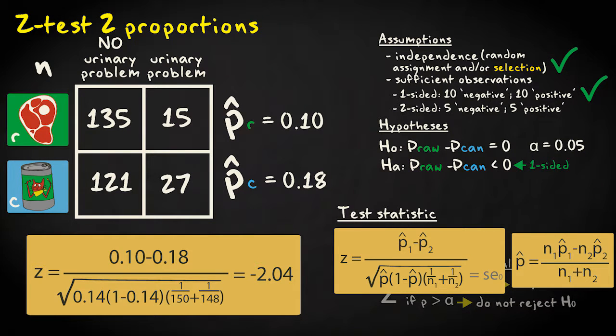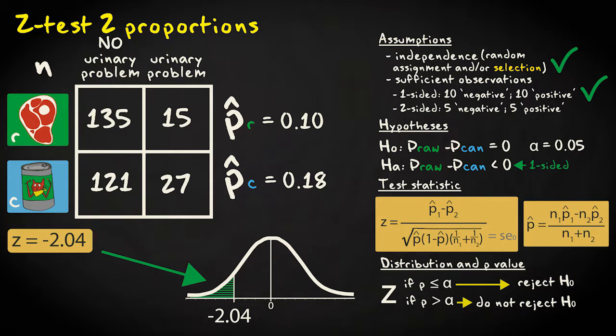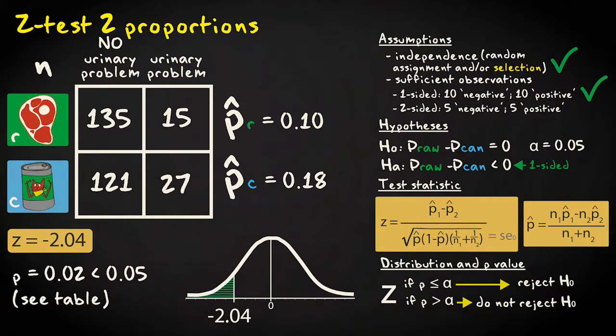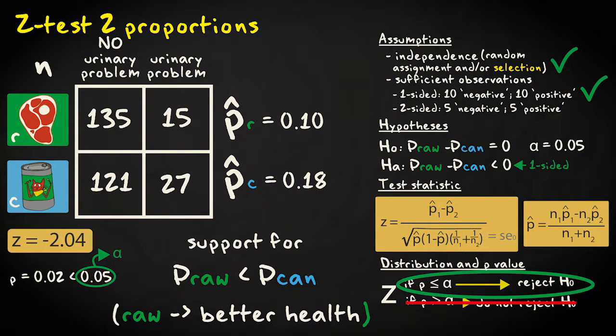The value is negative. We expected a negative value, so we determine the p-value by calculating or looking up the area under the curve in the left tail. The value is 0.02. This value is smaller than the significance level of 0.05, so we can reject the null hypothesis in favor of the hypothesis that the proportion of cats with urinary problems is lower for cats eating raw meat than for cats eating canned food.